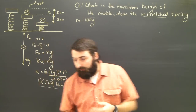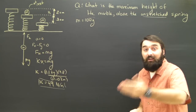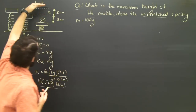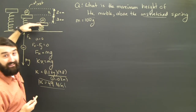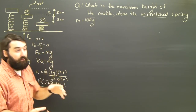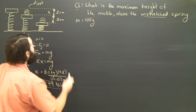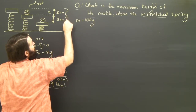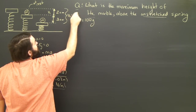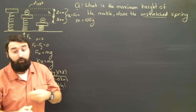Now that we know the K value, we can look at what happens when the marble is released. An important thing to note: when the object is pushed down all the way, the total compression x is not just 3 centimeters. It is pushed down 3 more centimeters from the equilibrium position, which was already 2 centimeters compressed. So the total x — call it x2 — is actually 5 centimeters.